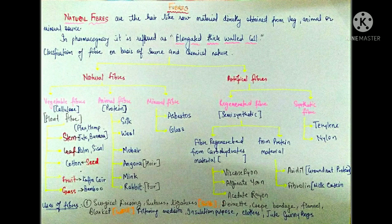Those obtained from leaves include palm. From seeds it is cotton. From fruit they are coir — coir is coconut fiber, the outer surface of coconut converted into fibers — and luffa, which is the turai fruit, also converted into fibers. For grasses, bamboo is used and converted into fibers.